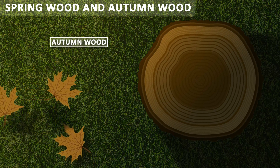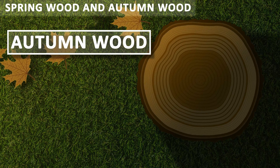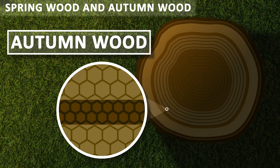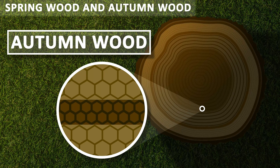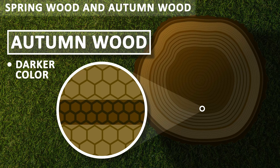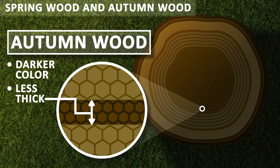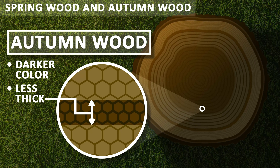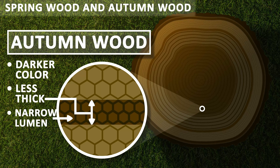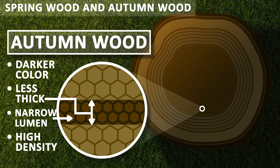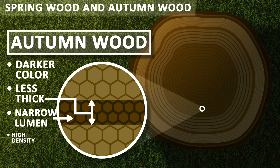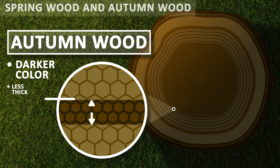The autumn wood is formed late in the year during the autumn season, and so it is also called late wood. The color of autumn wood is relatively dark and is represented by dark brown rings in the diagram. The lower thickness of autumn wood is due to the fact that the activity of vascular cambium is less during the autumn season. The vessels of autumn wood have narrow lumen, which increases the density of autumn wood.